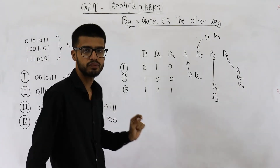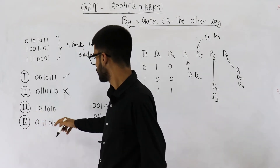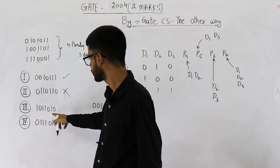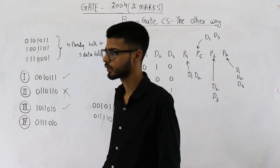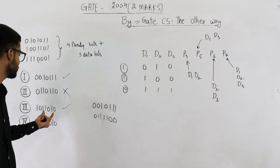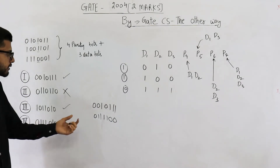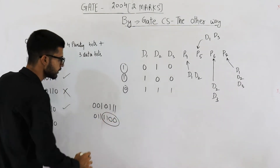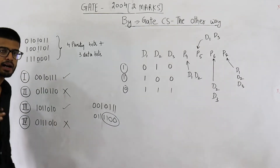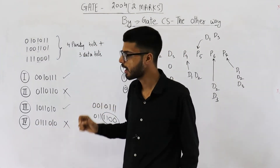Similarly, checking the third and fourth options: for data bits 101, the parity bits work out to be 1010, which matches, so option 3 is a valid code word. For option 4, the data is also 011, and we have already seen that the parity bits for 011 must be 1100, which does not match option 4 either. So option 4 is also incorrect. The answer to this question is options 1 and 3.